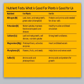Nutrient facts: what is good for plants is good for us. Nitrogen — for plants: leaf, stem, and root growth, green color, chlorophyll. For us: proteins and amino acids needed for all our cells.